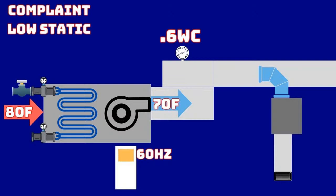If we were truly not moving enough air, we would have both low static and low supply air temperature — that is not our current condition. We do have a supply air setpoint of 55°F. The setpoints are: one inch of water column for supply static and 55°F for leaving air temperature.